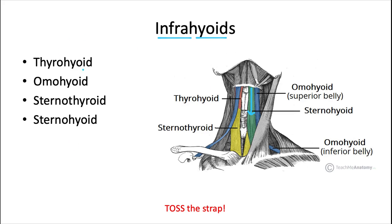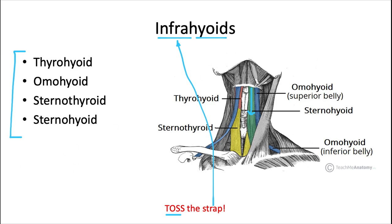How do I remember these names? I remember the phrase 'toss the strap.' Toss refers to the first letter of each of these four muscles, and 'strap' helps me remember infrahyoid, because the infrahyoid muscles are also known as the strap muscles due to their shape.